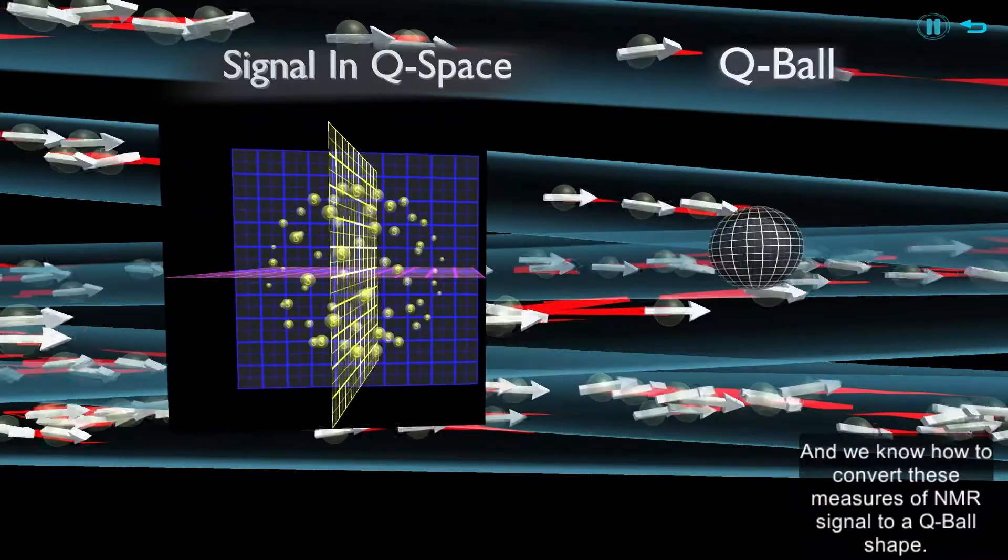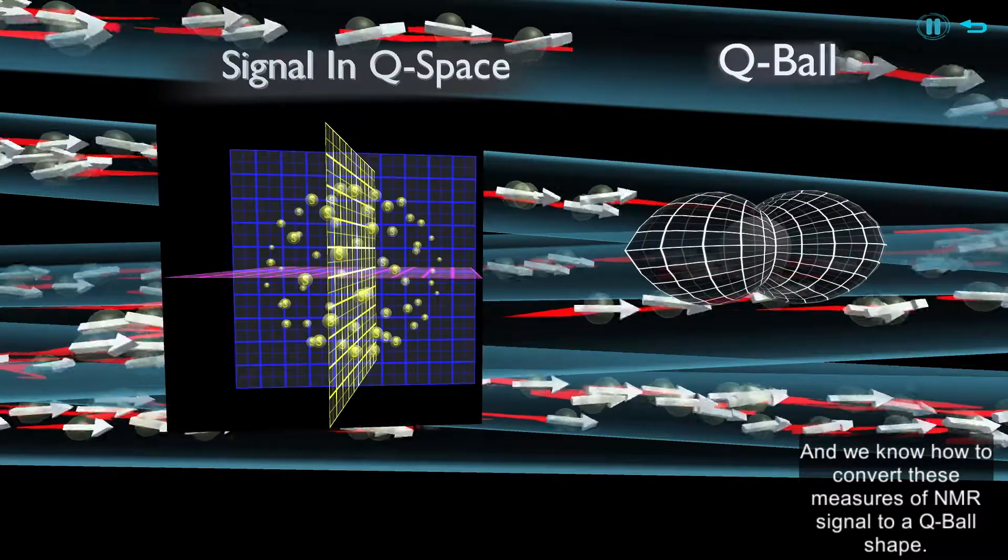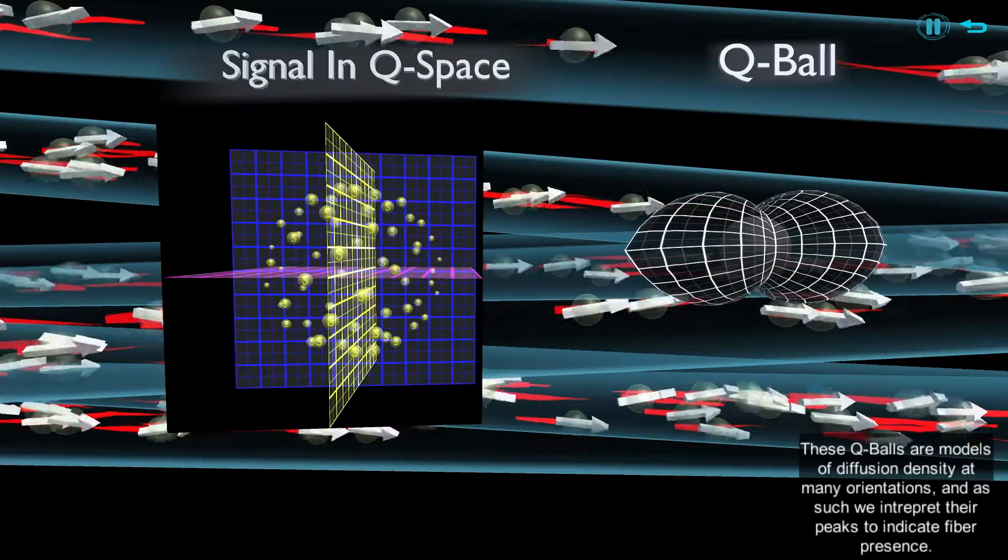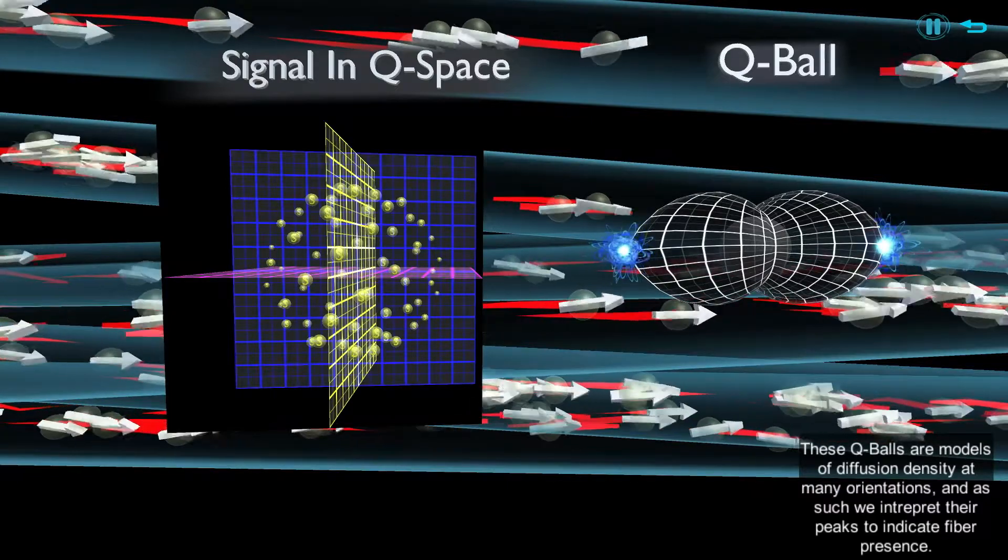And we know how to convert these measures of NMR signal to a Q-ball shape. These Q-balls are models of diffusion density at many orientations, and as such we interpret their peaks to indicate fiber presence.